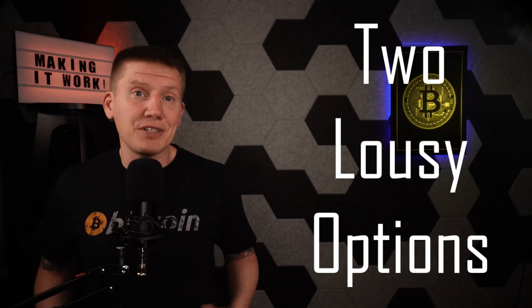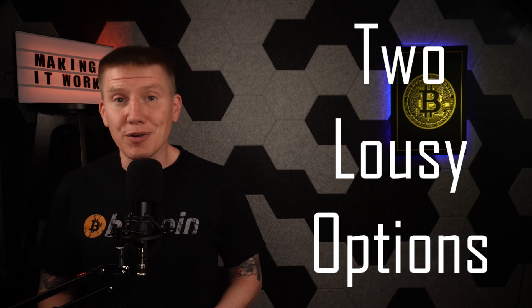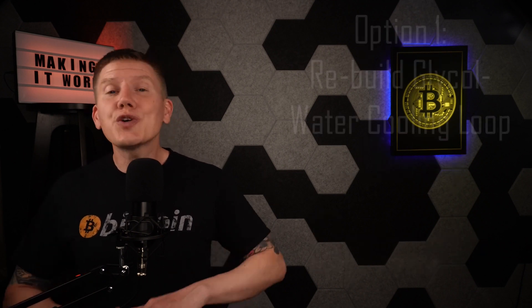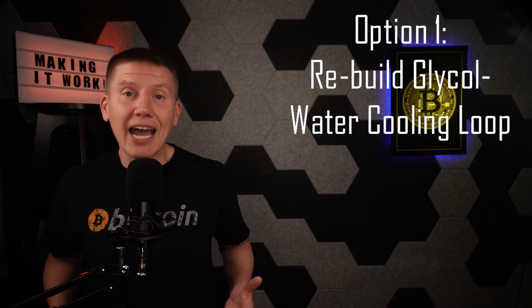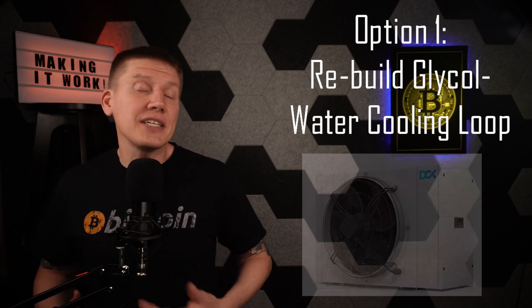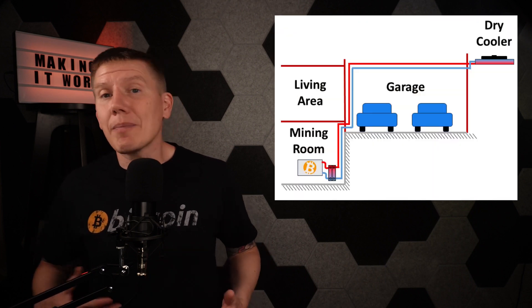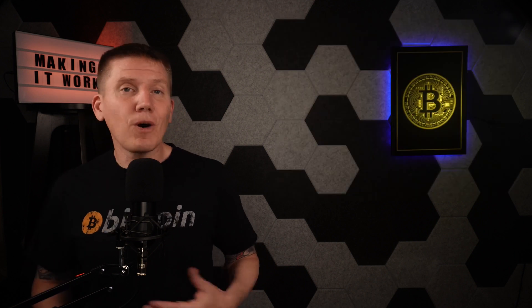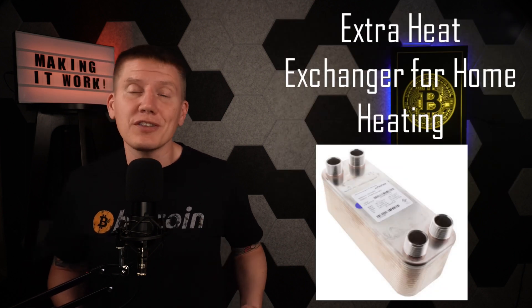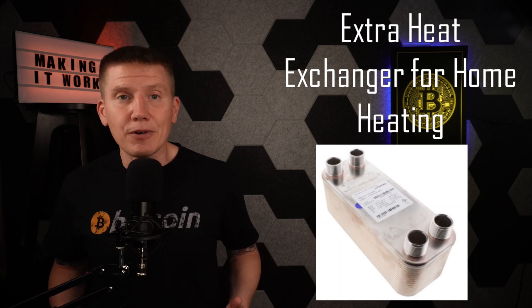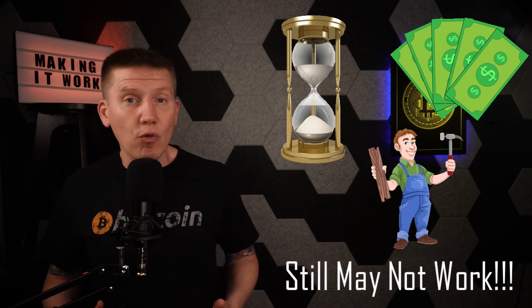So now I'm stuck with two options to fix my system, and neither of these options are very great. The first option is to completely redesign and rebuild my entire glycol water cooling loop to integrate in the DCX ICP-15 dry cooler. The problem here is I'm not sure this is going to work. I can't shorten the distance between my dry cooler and my mining room. The lines have to stay as long as they are. Also, I have a heat exchanger and other components in this loop, which I'm using to deliver heat to my house. I don't want to remove these, and these add even more resistance to the fluid flow. So I might spend a ton of time, money, and effort rebuilding everything, and I still might have a fluid flow and overheating problem.